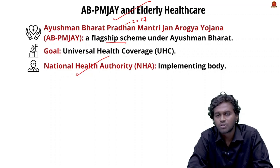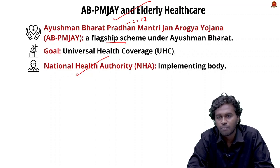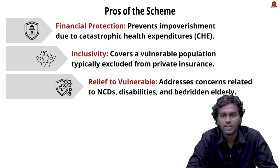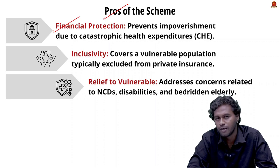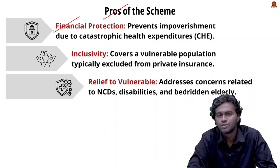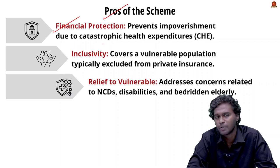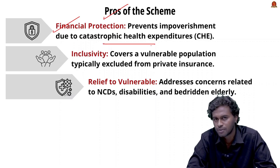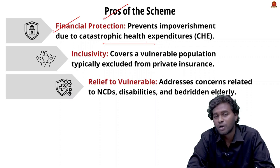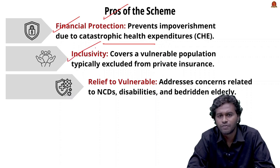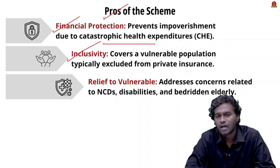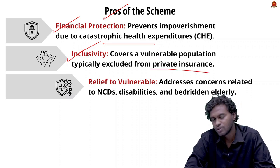The National Health Authority is the apex body responsible for implementation of PM-JAY. The first major benefit is financial protection — as an insurance scheme providing ₹5 lakh coverage, it prevents impoverishment due to catastrophic health expenditure and reduces health costs for dependent populations. The second benefit is inclusivity — by expanding to those above age 70, it covers vulnerable populations typically excluded by private insurance companies.